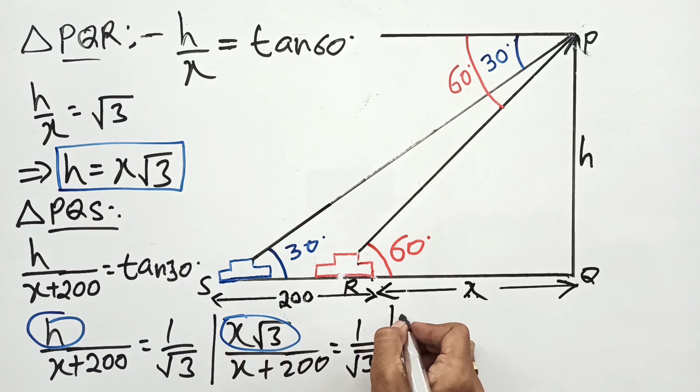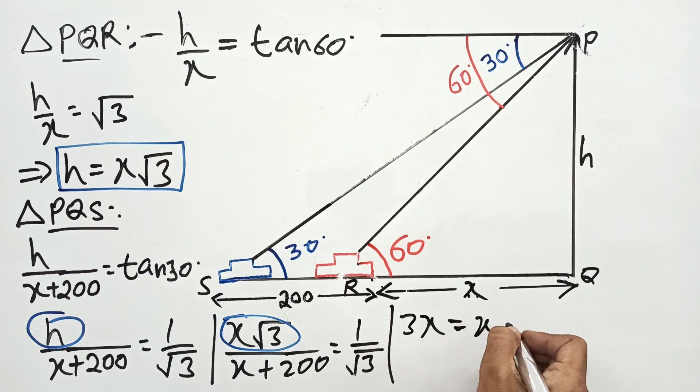By cross multiplying, this will be 3x equals x plus 200. So 2x equals 100, and x equals 100.